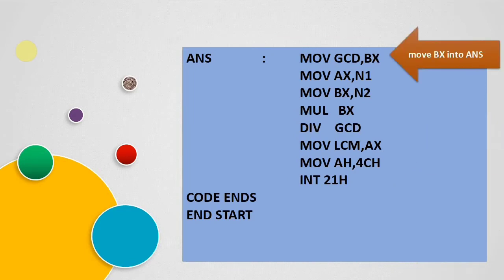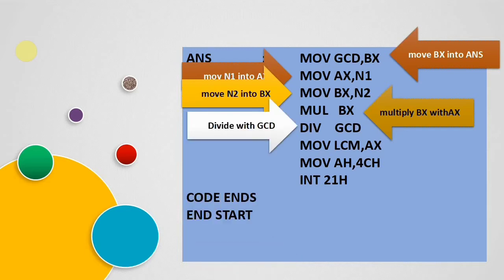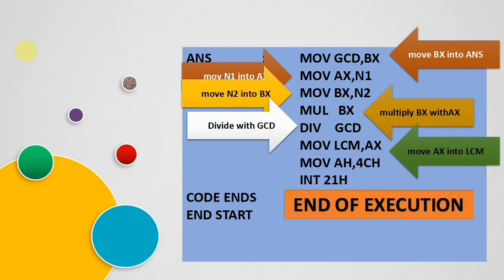When we jump to the label ANS, the second number BX is taken into GCD. Then we take N1 into AX and N2 into BX and multiply both numbers. We then divide the product with the GCD — the quotient value is in AX and we store that into LCM. The instruction MOV AH, 4CH followed by INT 21H closes the execution — that is the end of the program.